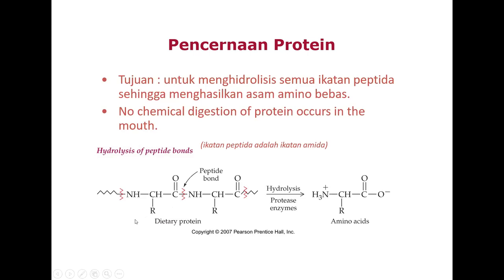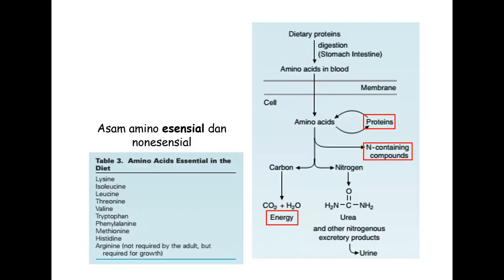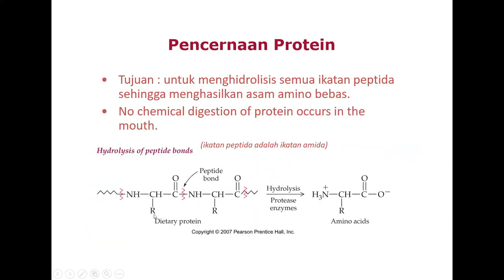Seharusnya kita kuliah dulu tentang struktur protein sebelum metabolismenya—bagaimana protein terbentuk dari asam amino yang digabungkan dengan ikatan amida, membentuk struktur primer, sekunder, tersier, dan kuartener. Pertanyaan tentang prion: Prion adalah protein yang bisa terbentuk akibat mutasi atau modifikasi protein, dianggap asing oleh tubuh. Contohnya penyebab penyakit sapi gila—ada protein asing di otak yang mengganggu fungsinya. Prion bisa ditularkan dari satu hewan ke lainnya, memancing reaksi imun, menyebabkan nekrosis jaringan dan inflamasi.